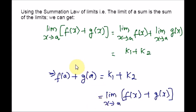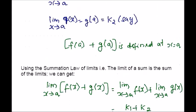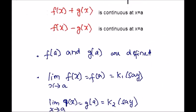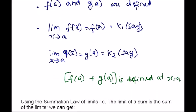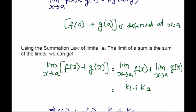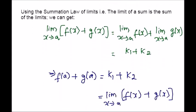The proof for the subtraction rule is similar to the proof for the addition rule — for all steps you just have to replace the plus sign with a minus sign. So you can refer to the proof for the addition rule. We start with the definition of continuity: the function has to be defined at that point, so f(a) and g(a) are defined. For the limit, we use k1 and k2, and using the summation law of limits step by step, we prove continuity. You can do the same thing for subtraction.